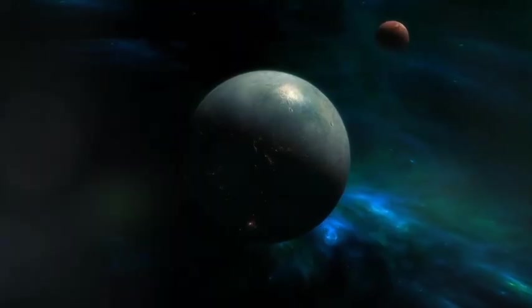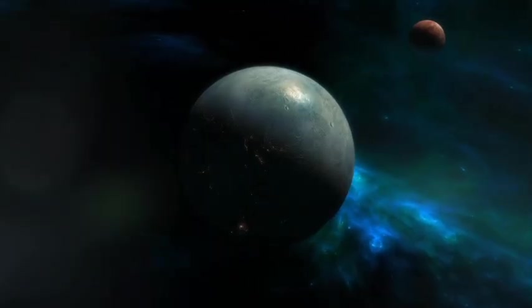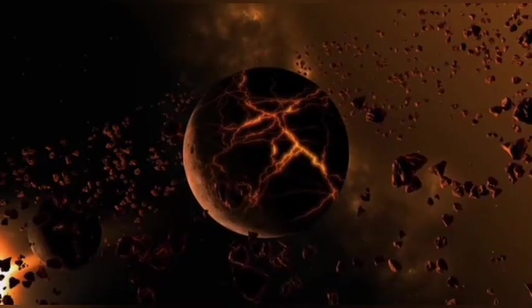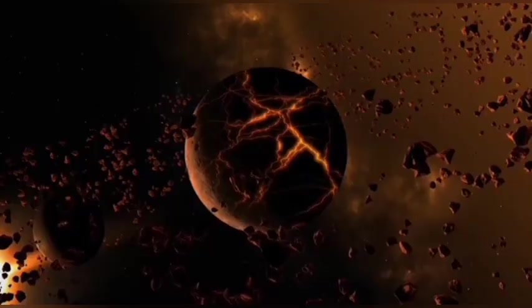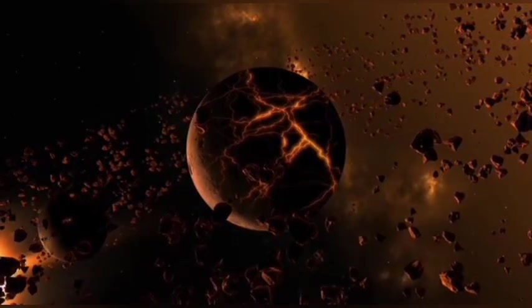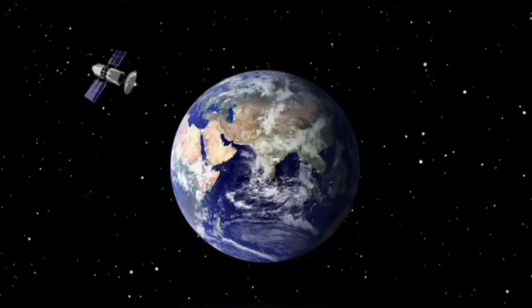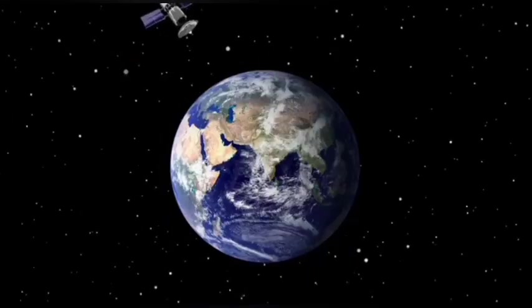James Webb is not just a bigger telescope, it's a fundamentally different kind of observatory. Its primary mirror stretches 6.5 meters across, dwarfing Hubble's 2.4-meter dish and collecting more than six times the light. But the real breakthrough is in its eyes.